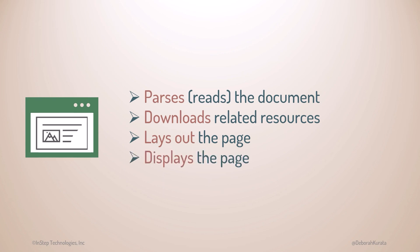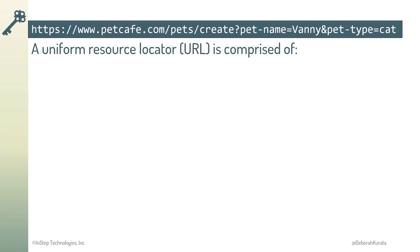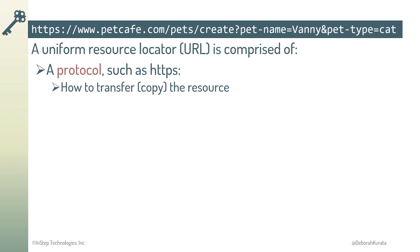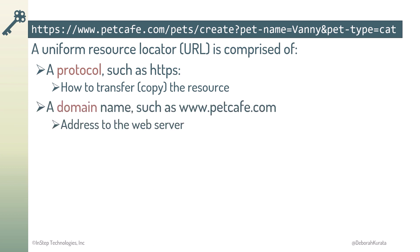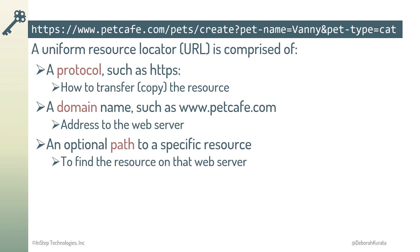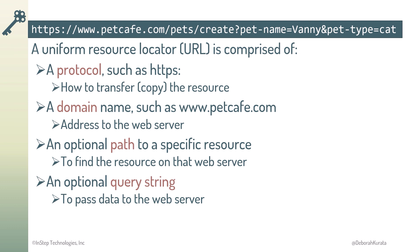And that's how the web works. A URL is comprised of a protocol, such as HTTPS, which defines how to transfer or copy the resource; a domain name, such as www.petcafe.com, that provides the address to the web server containing the resource; an optional path identifying how to find the resource on that web server; and an optional query string to pass data to the web server.